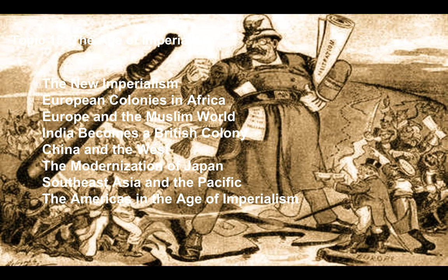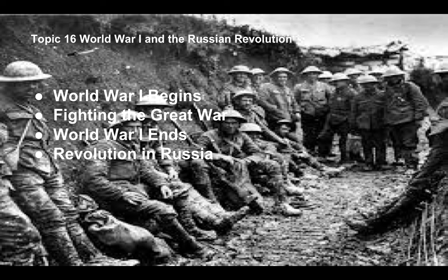Topic 15 covers Imperialism — The New Imperialism. Lessons include: European Colonies in Africa, Europe and the Muslim World, India Becomes a British Colony, China and the West, the Modernization of Japan, South Asia and the Pacific, and the Americas in the Age of Imperialism.